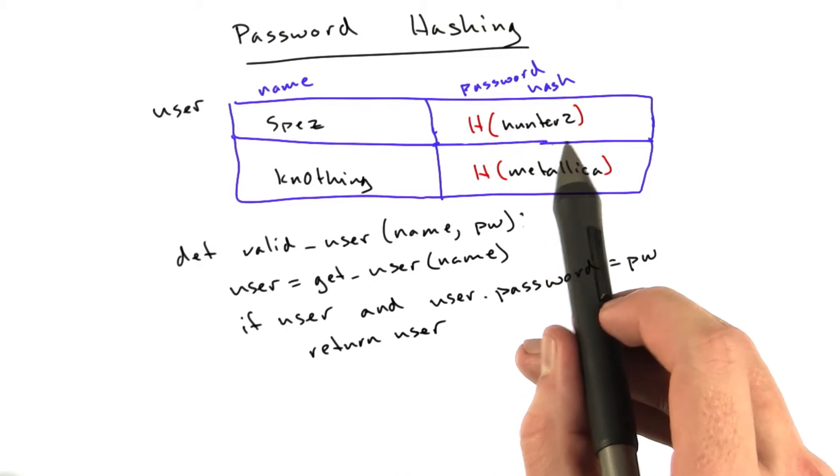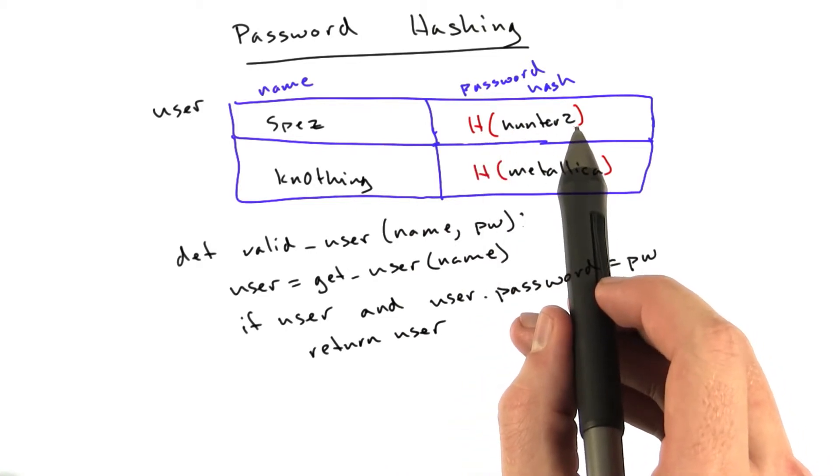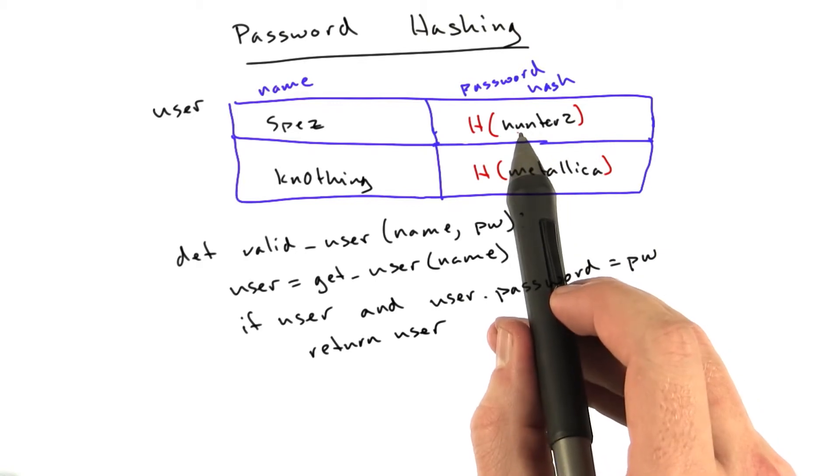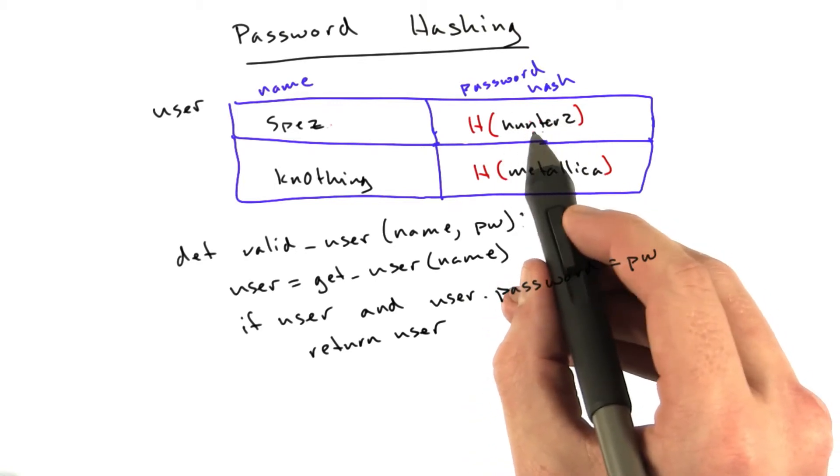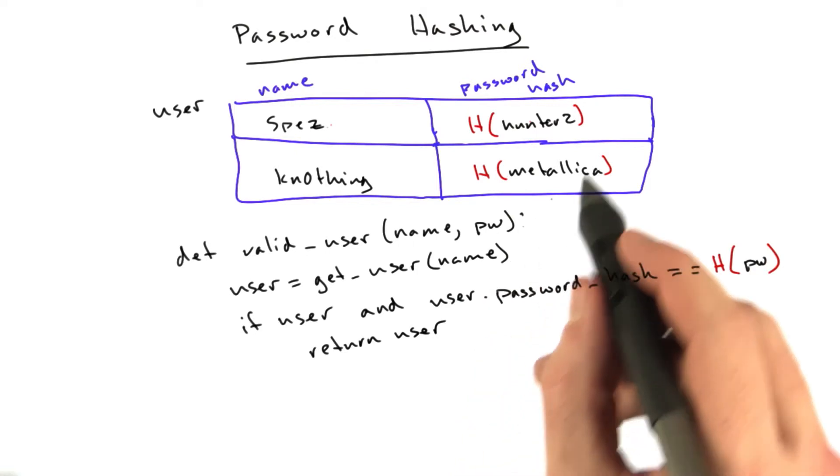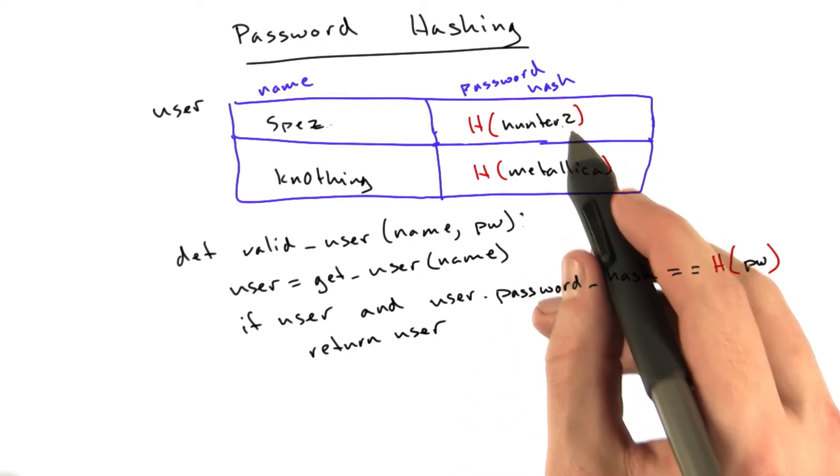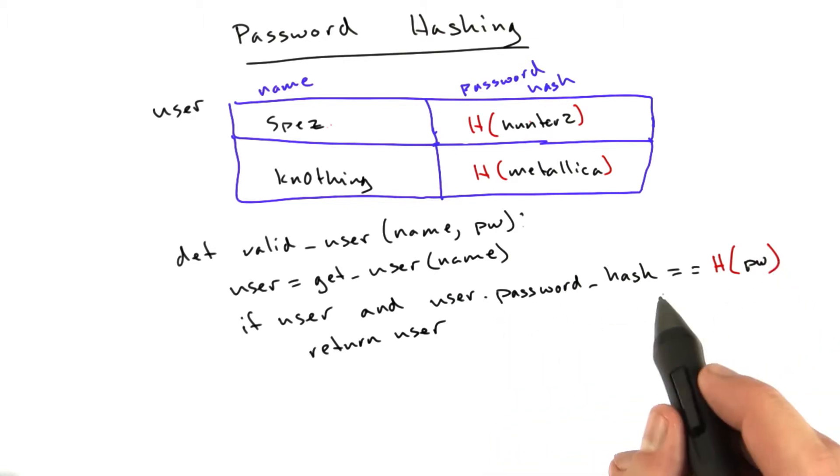And you know it's very, very difficult, basically impossible, to turn the hash of this into the actual input parameter. This function changes a little bit, so instead of just comparing pw to the password field in the database, we compare hash of pw to the password hash in the database.